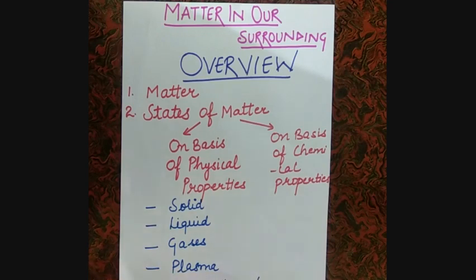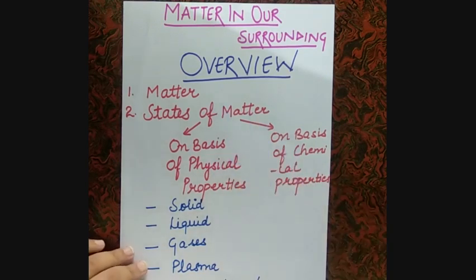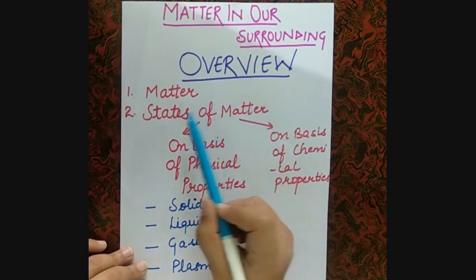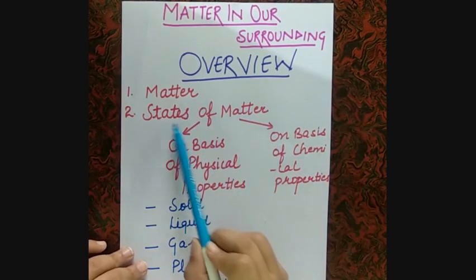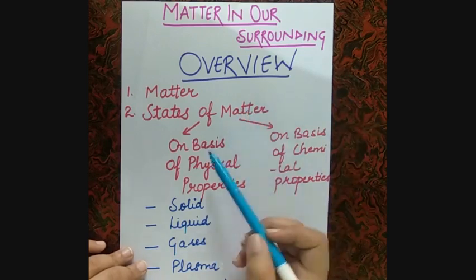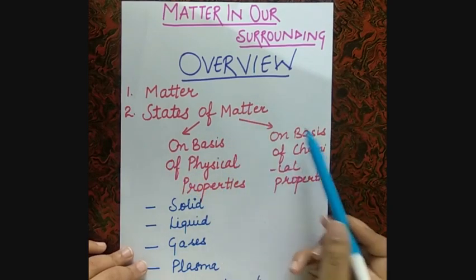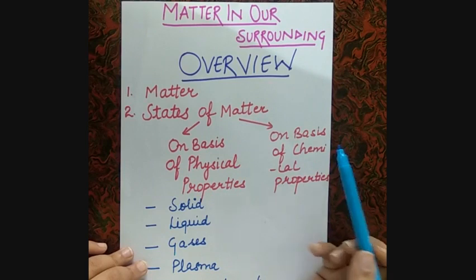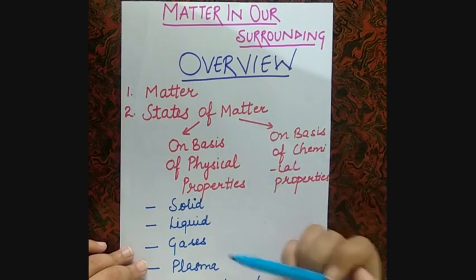Matter is anything that has mass and occupies space — this is known as matter. After that, we defined some states of matter on the basis of physical properties as well as on the basis of chemical properties.